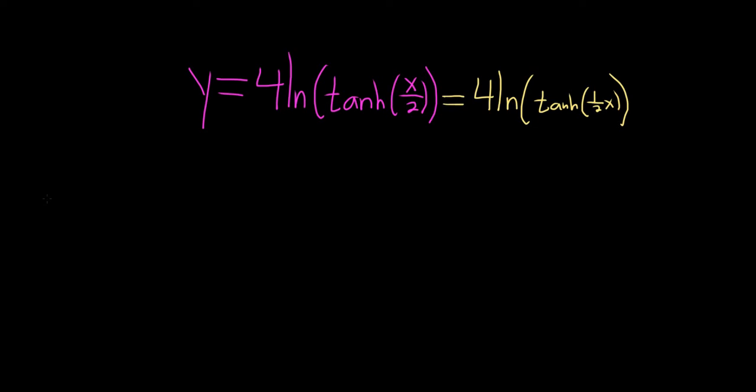Okay, so let's go ahead and take the derivative. So y prime, the 4 hangs out, it's a constant, times the derivative of the natural log, which is 1 over whatever's inside. If you have the derivative of ln x, we know that's just 1 over x. So here, it's 1 over whatever is here. So it's 1 over tanh of x over 2,